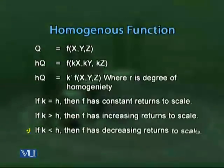Using the concept of homogeneity, we can also assess returns to scale by comparing h and k — where q on the left side is multiplied by h. If there is a greater increase in output as a result of proportional increase in all inputs, then h will be greater than k, indicating increasing returns to scale. If h equals k, we have constant returns to scale. If h is less than k, we have decreasing returns to scale.